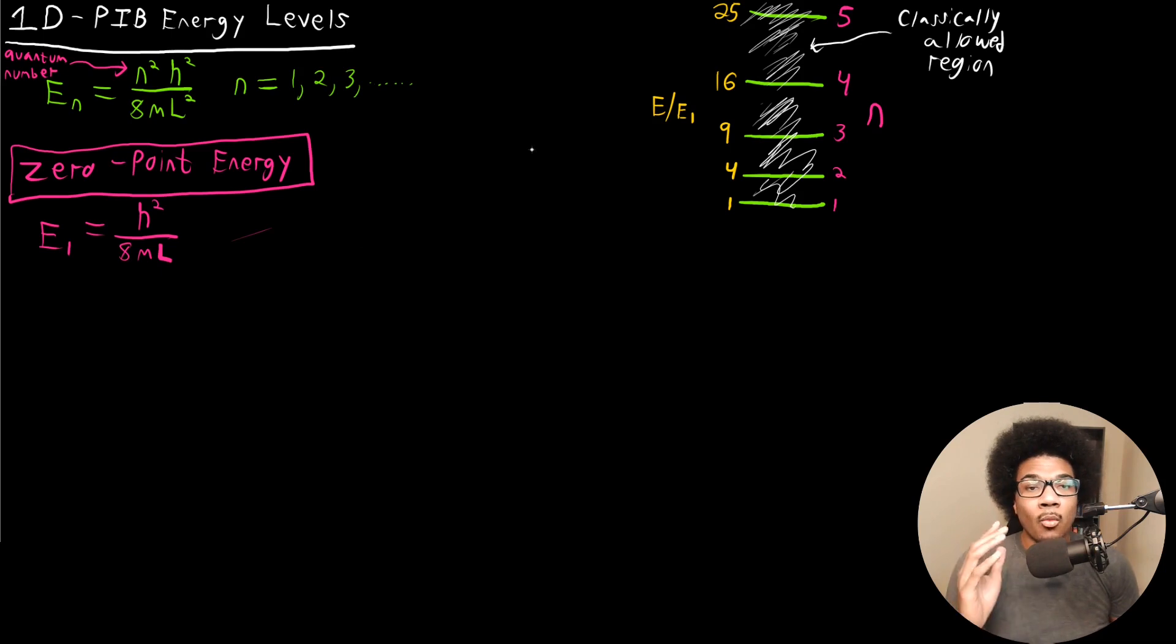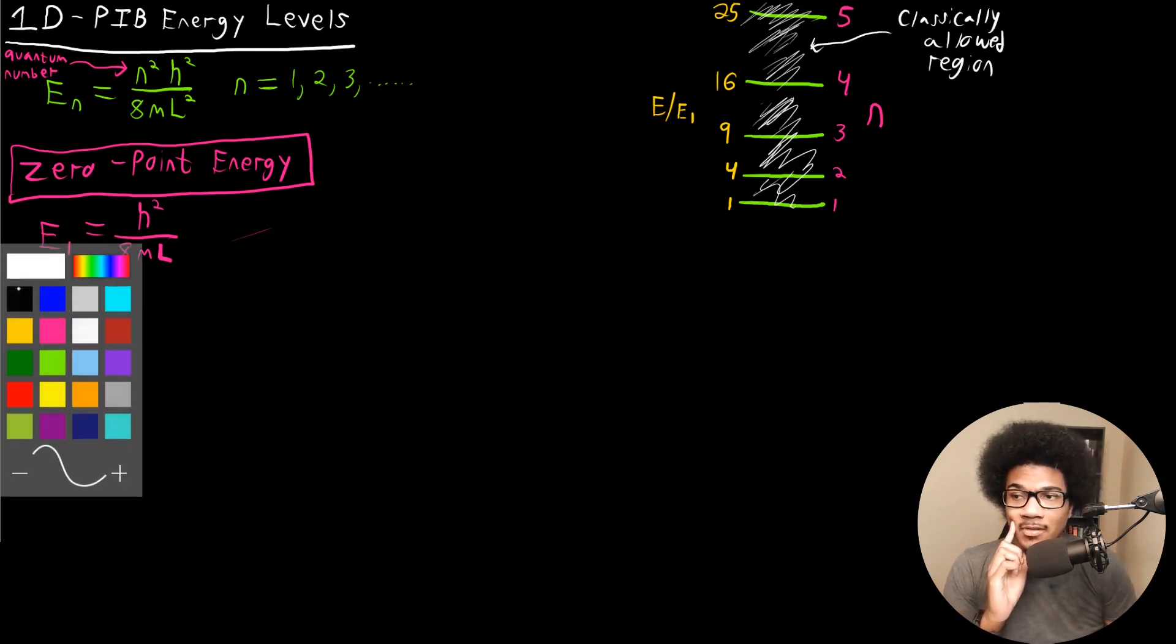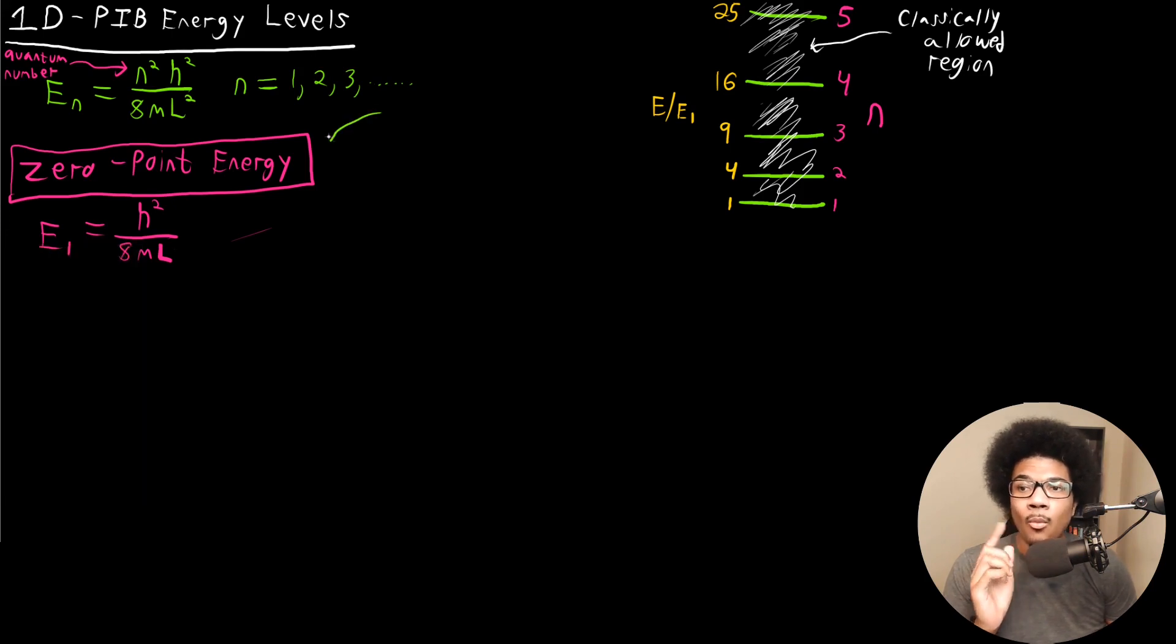One thing that's really interesting to think about is why we have this zero point energy in the first place. Why is it that we even have a zero point energy? How can we explain it? So there are two explanations for the zero point energy. One of them is that the uncertainty principle demands it.